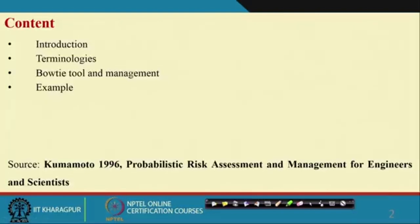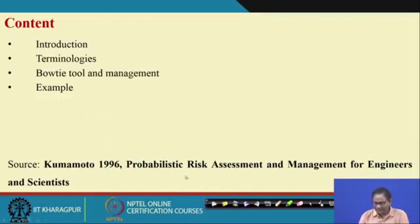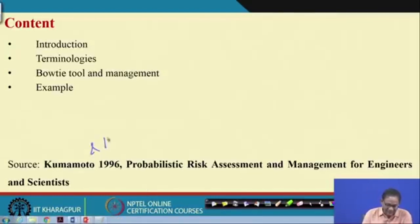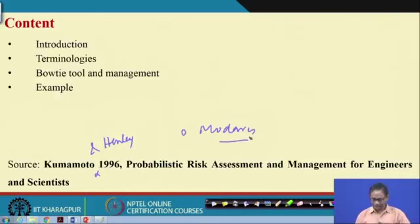So the topics we will discuss are: introduction, terminology, the bow tie tool and management, and several examples. Although I have referenced the book by Henley and Kumamoto, there is another book we have taken into consideration — by Modarres — on reliability and risk assessment. Later I will show the reference for Modarres as well.